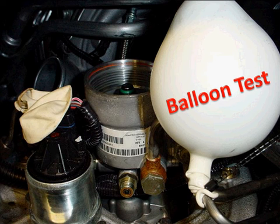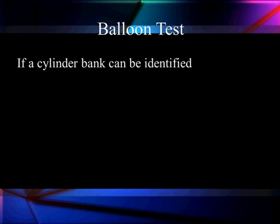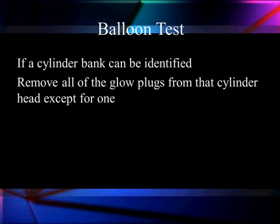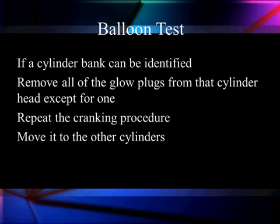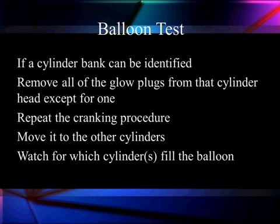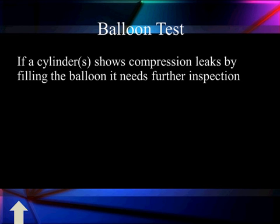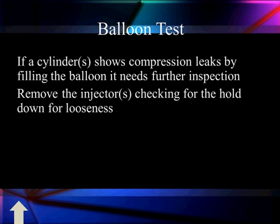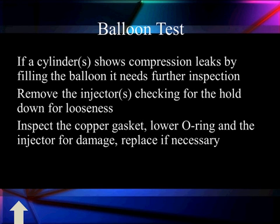We have identified it as an injector problem — it is an injector leaking back into this head, destroying and overriding the check valve on that cylinder head. If one bank is identified, remove all the glow plugs from that cylinder head except for one to eliminate the compression. Repeat the cranking procedure and move to other cylinders until we find the one inflating the balloon. The cylinder that causes it to inflate is the bad cylinder. This shows us compression leaks by filling the balloon and needs further inspection. We've got to remove the injector from this point. Remove all the injectors and check for hold-down looseness — if it was loose, you have found the cause of the problem. Replace the O-rings, replace the copper gasket, and replace the check valve in that head.